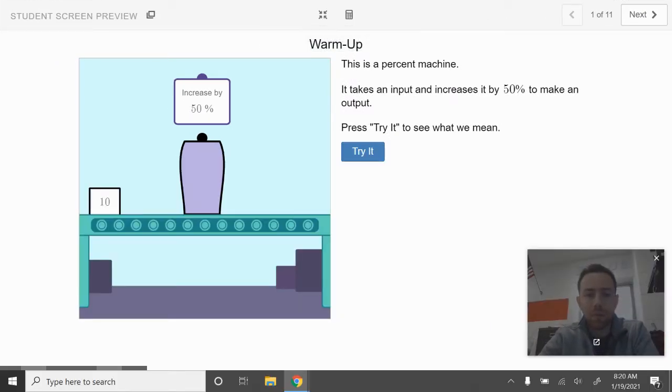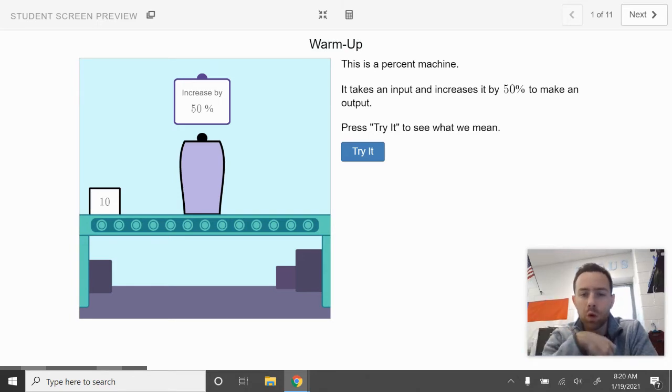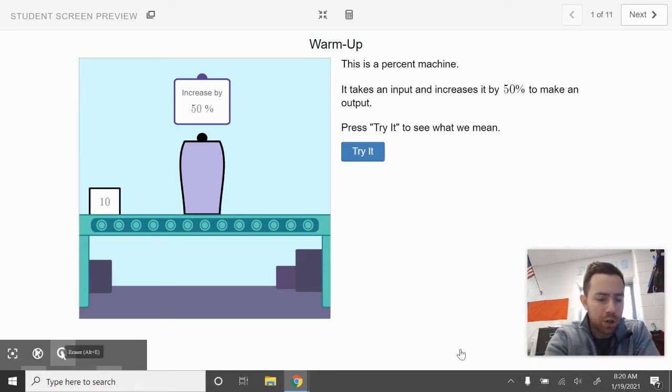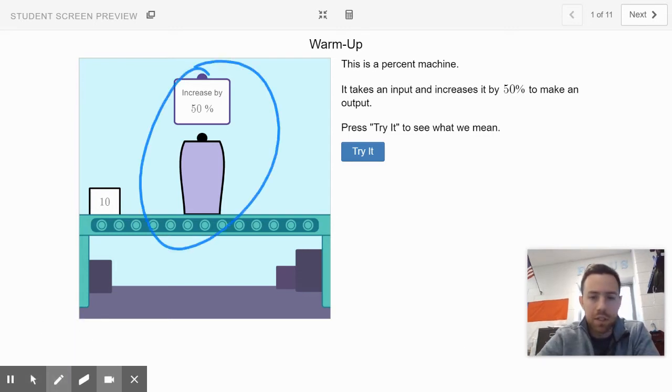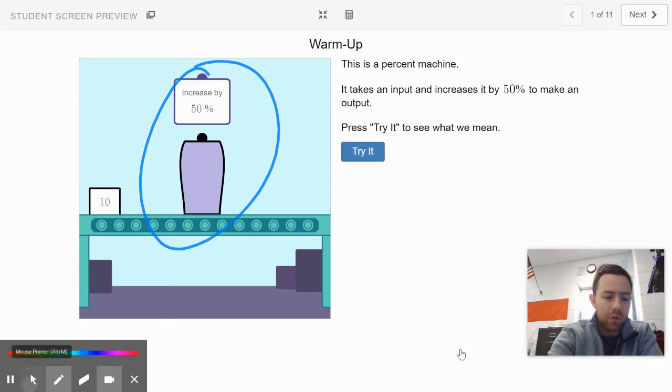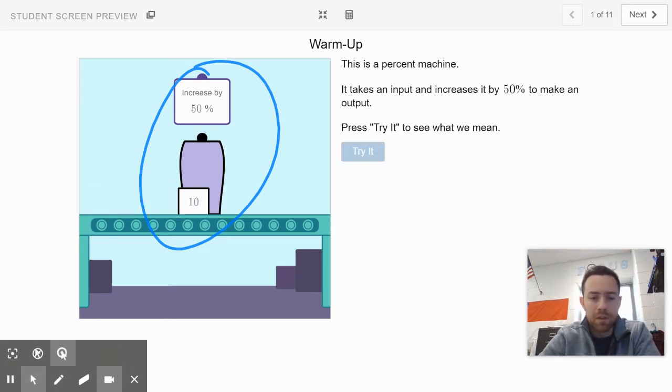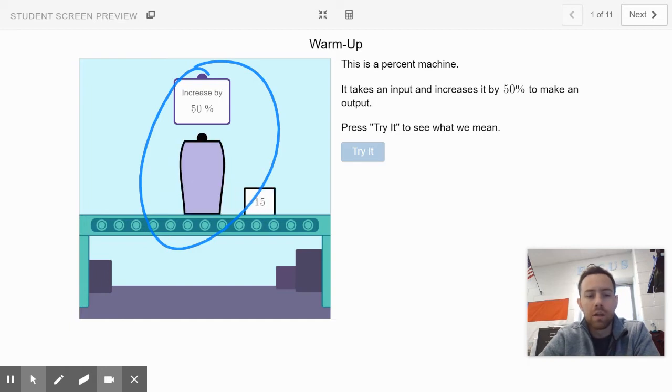So slide one is the warm up. It introduces this percent machine to you. It's very beautiful. It looks like this, as you can see. That's the percent machine. It increases numbers by 50 percent, at least in this case. If you hit try it, it'll show you what happens to 10. It magically increases it by 50 percent and it turns into 15. That's the percent machine.